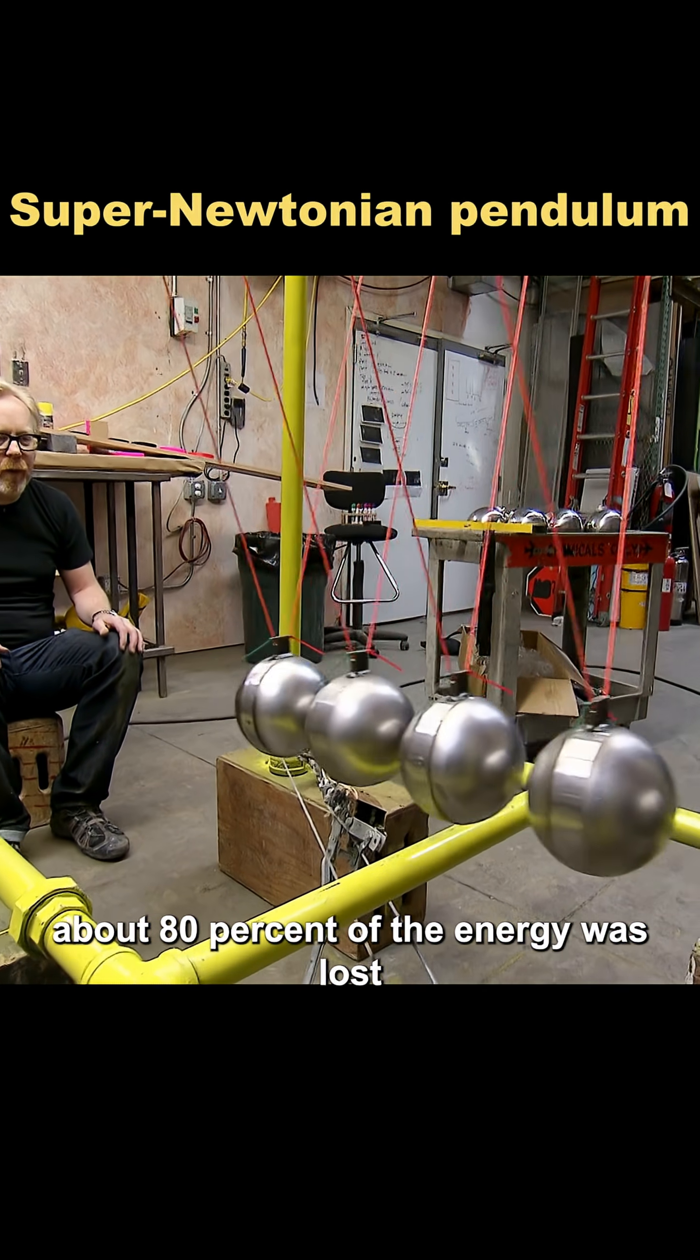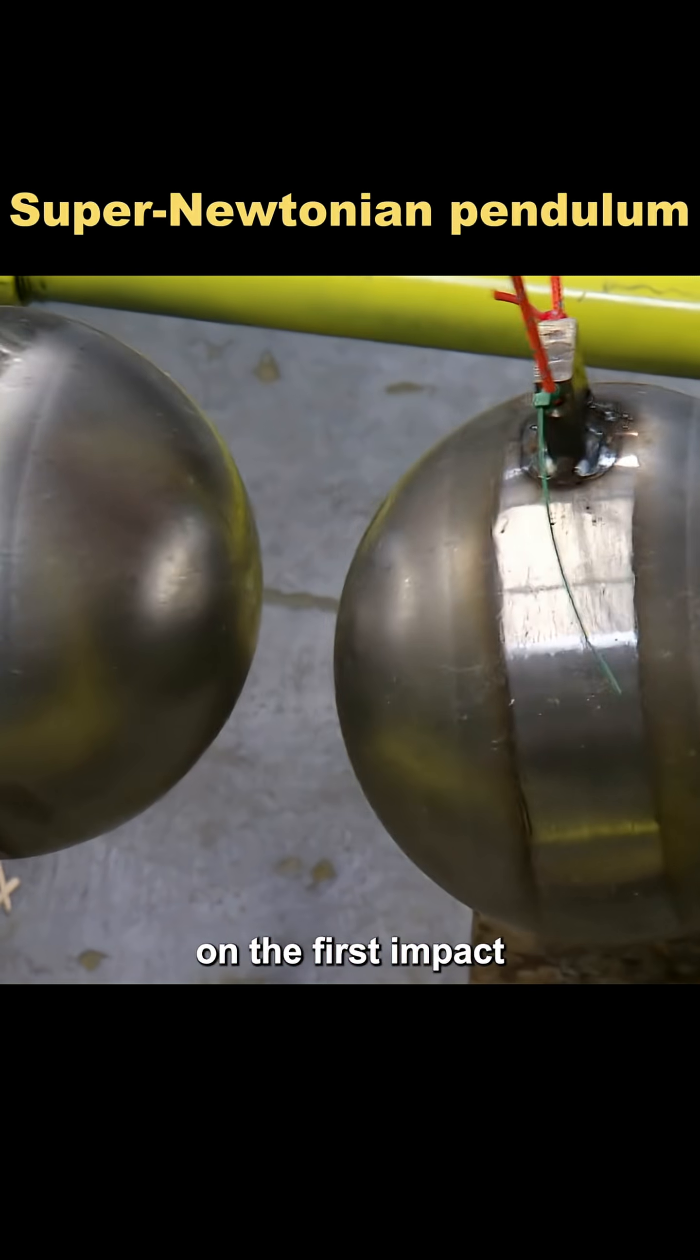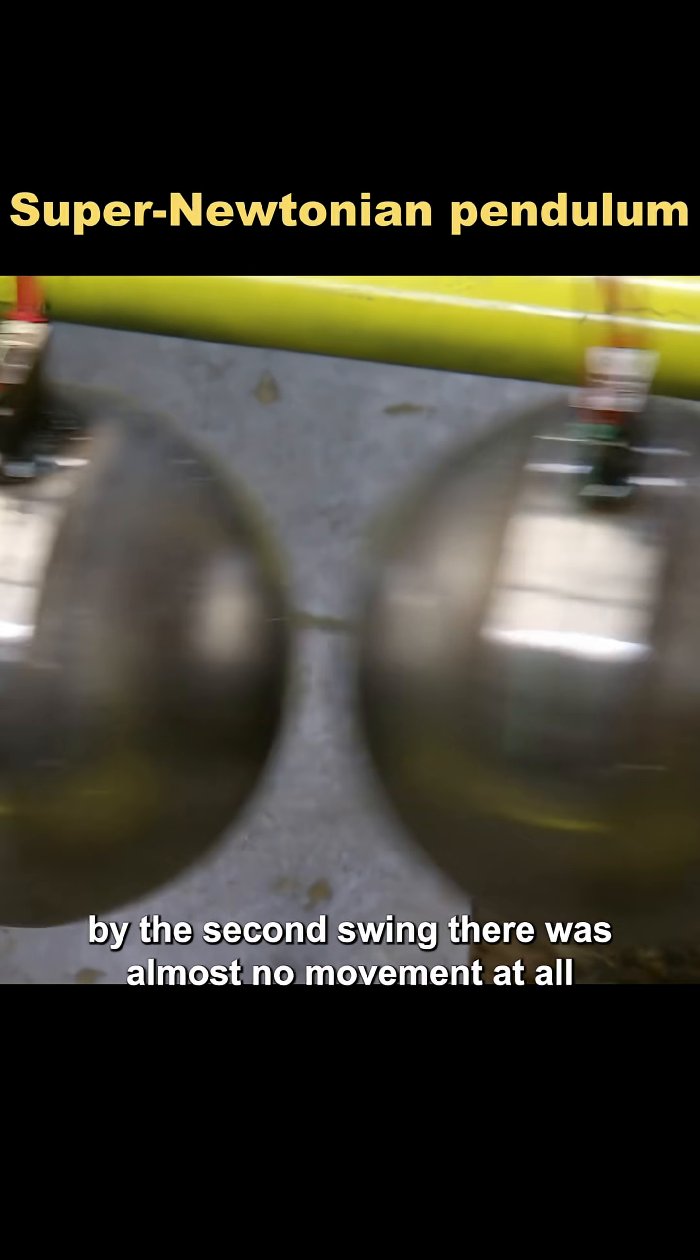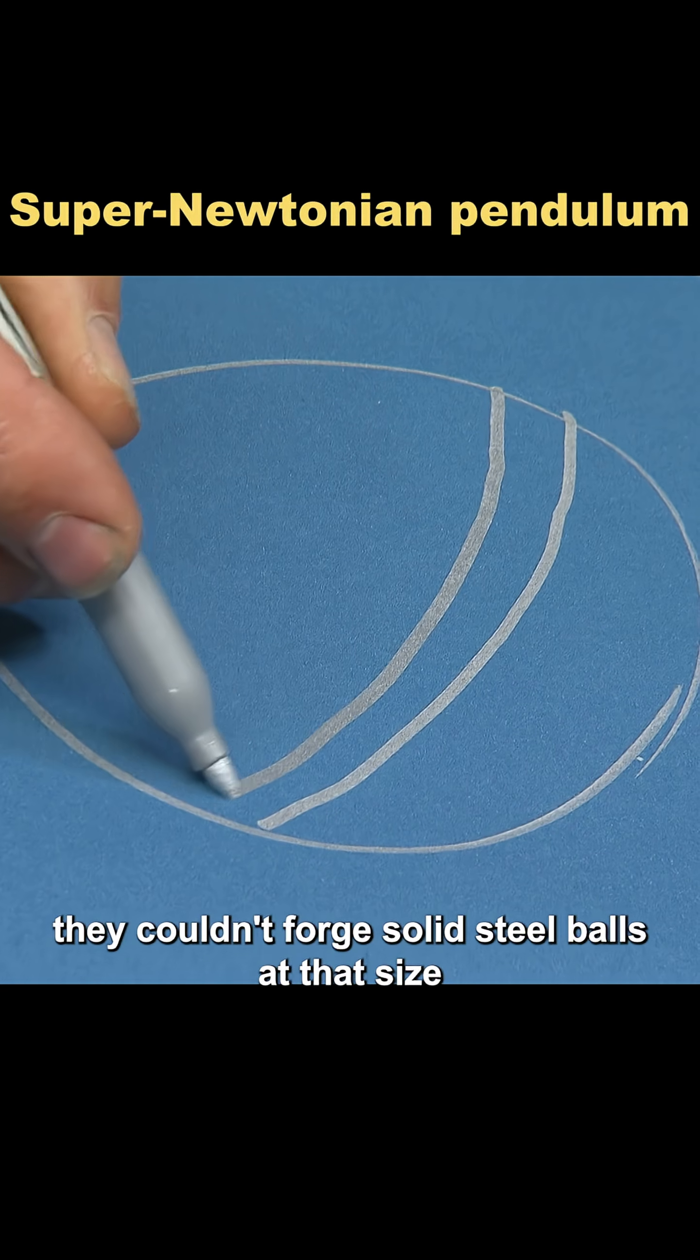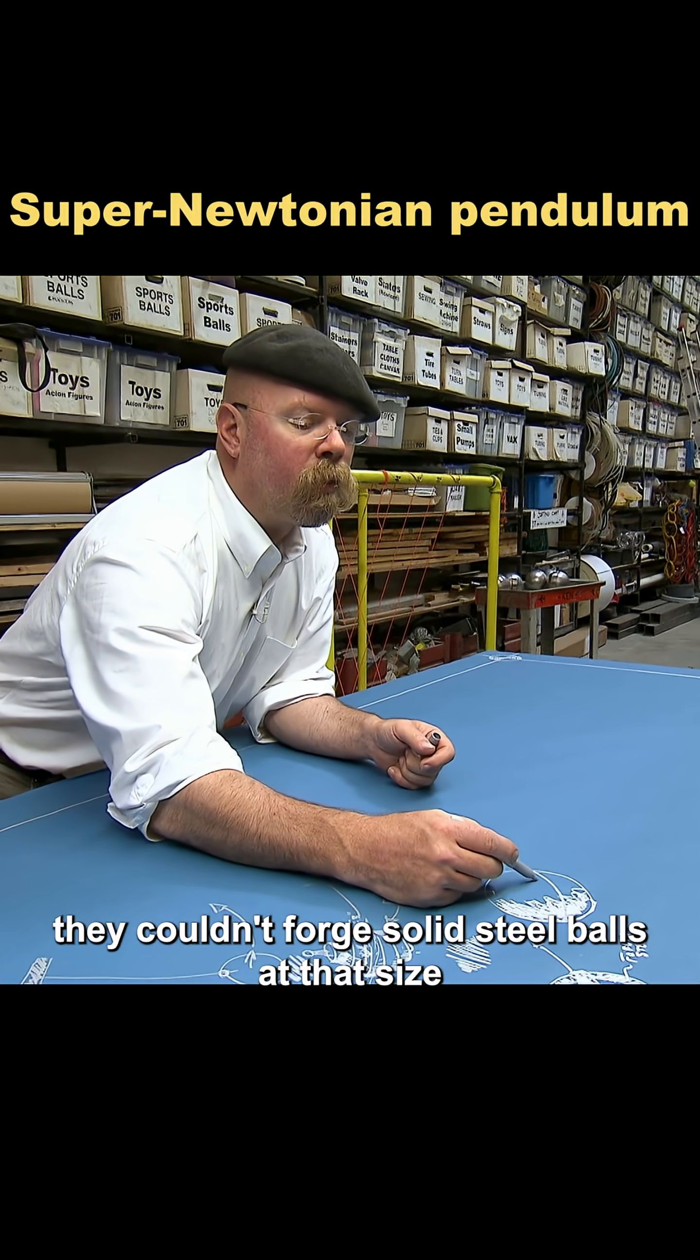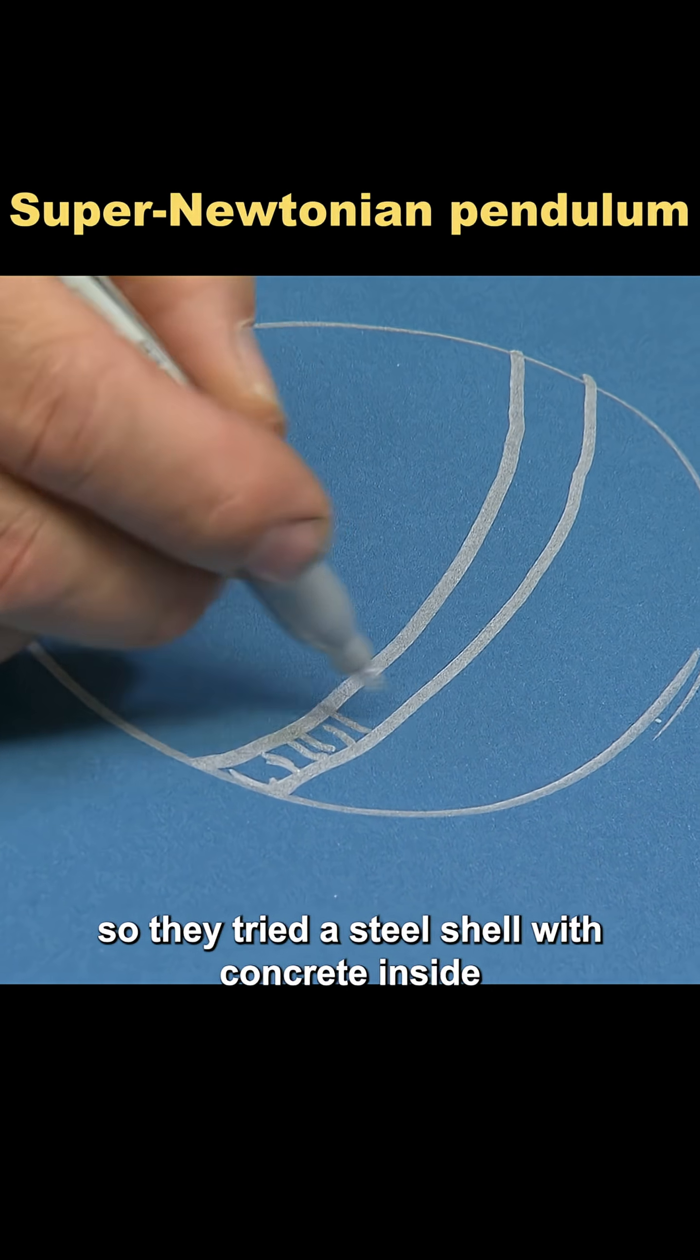About 80% of the energy was lost on the first impact. By the second swing, there was almost no movement at all. The problem? They used concrete as a filler material. They couldn't forge solid steel balls at that size, so they tried a steel shell with concrete inside.